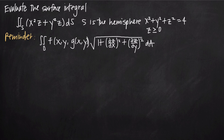In this video, we're going to be talking about how to evaluate a surface integral. In this particular problem, we've been asked to find the surface integral of the function x squared z plus y squared z ds, where s is the hemisphere given by the equation x squared plus y squared plus z squared equals 4, and by the inequality z greater than or equal to 0.